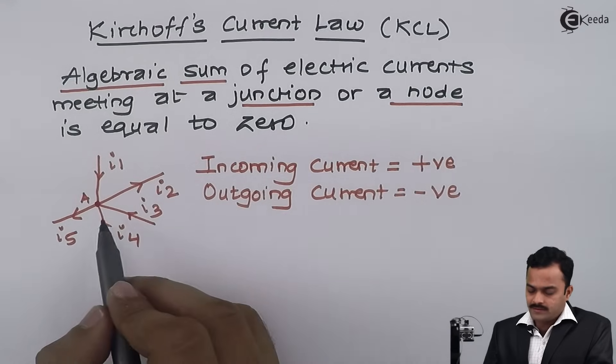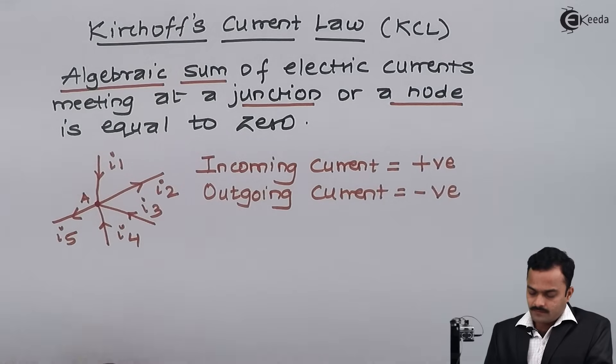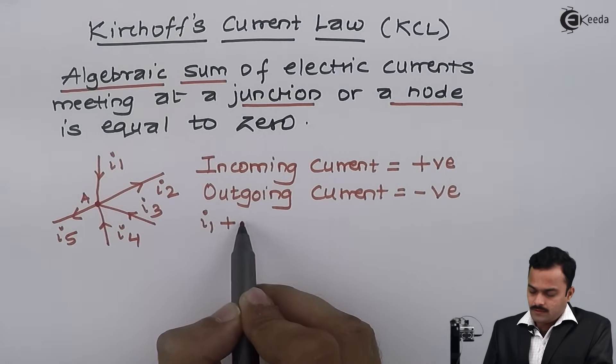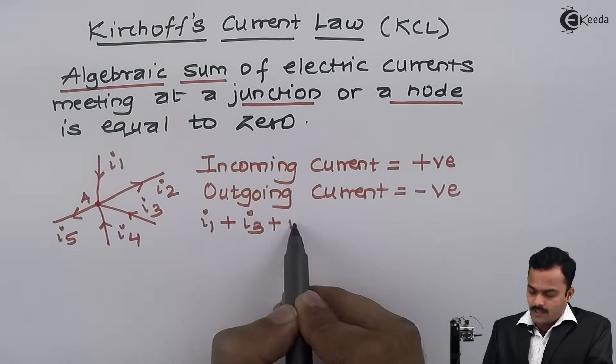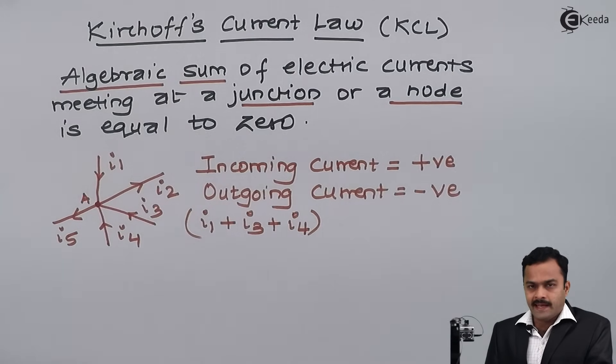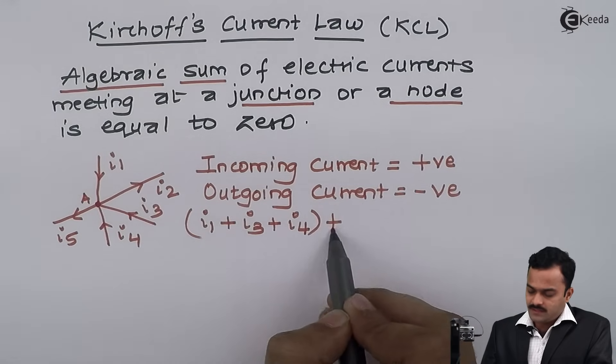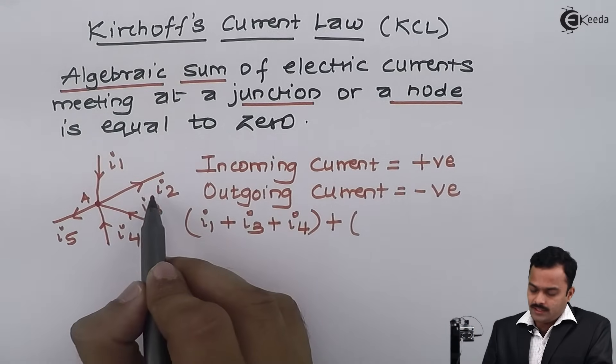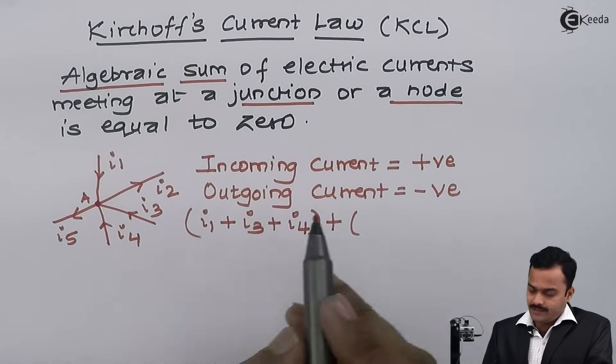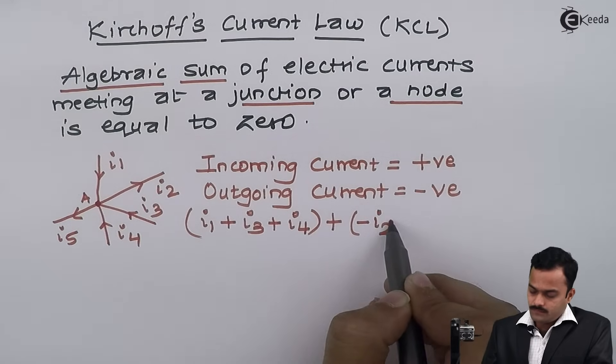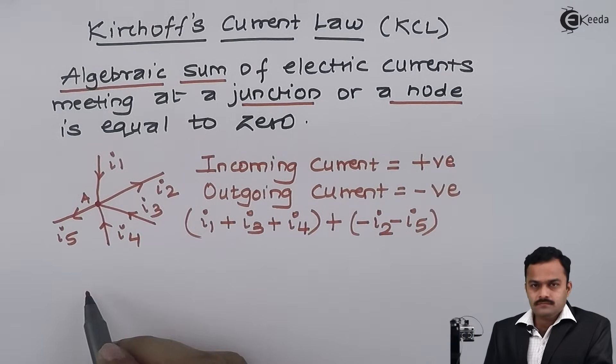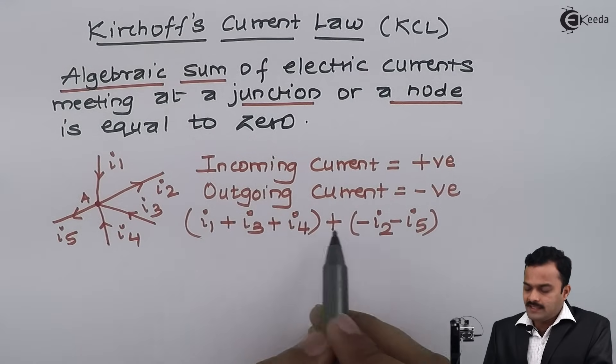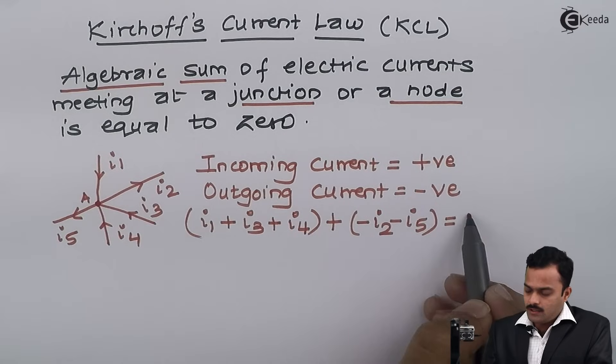For incoming currents, I have i1, i3, and i4, so that's positive i1 plus i3 plus i4. For outgoing currents, I consider negative, so there are i2 and i5. I have considered a sign along with the value—that is the meaning of algebraic sum. As per the law, this should equal zero. Simplifying this expression: i1 plus i3 plus i4 equals i2 plus i5.